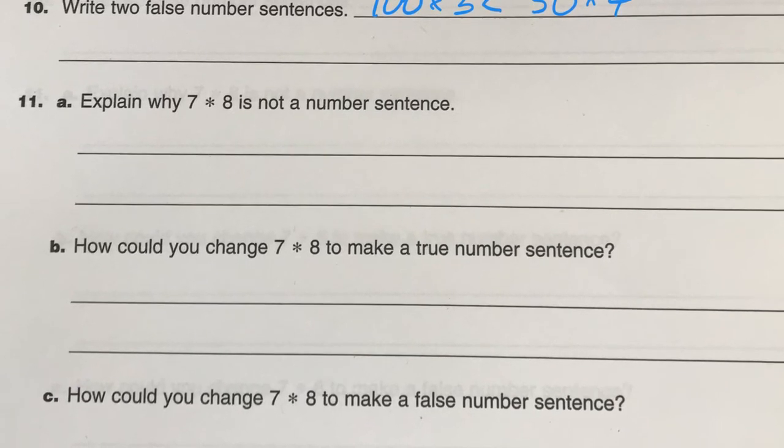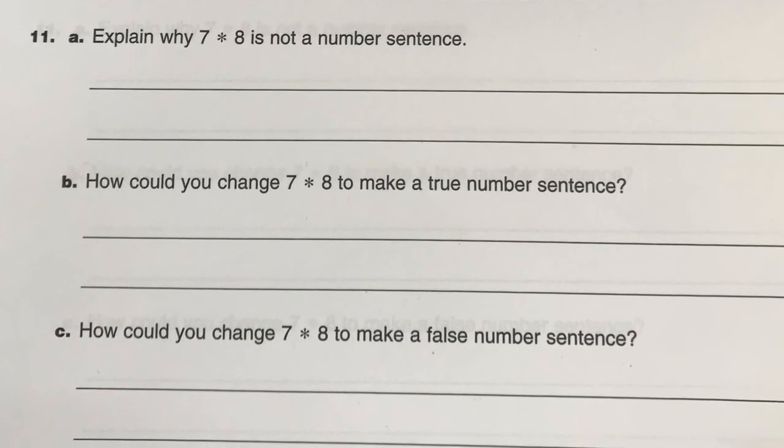How could you change it? Well, you can add something to make it into a number sentence. And then how can you make a false number sentence? Well, you could write 7 times 8 is equal to something that is not true, that is false. Or 7 times 8 is less than whatever. Just make it false.